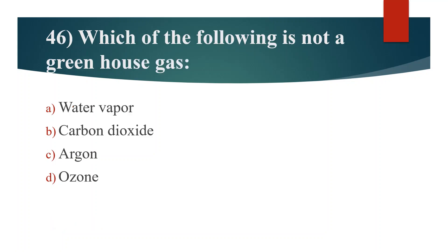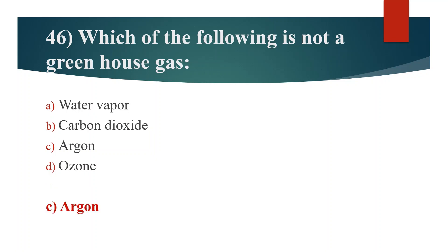Forty-sixth question. Which of the following is not a greenhouse gas? Option A: Water vapor. Option B: Carbon dioxide. Option C: Argon. Option D: Ozone. Answer is Option C: Argon.